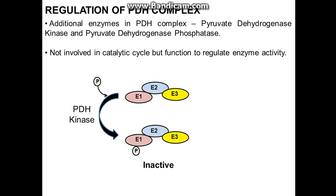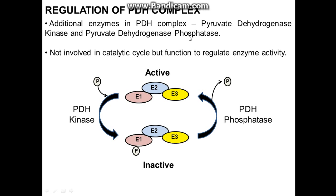This reaction is not part of the TCA cycle, as acetyl-CoA can be generated by other means. It's not part of glycolysis either. Regarding regulation of this complex — there are additional enzymes in the PDH complex to regulate it. You have protein enzymes to regulate your enzymes, but they are not actually involved in any catalytic activity; they are just there to regulate how fast the dehydrogenase acts.